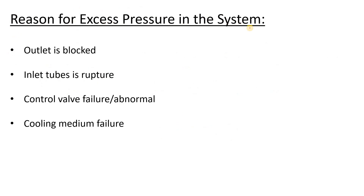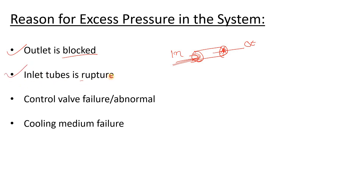There may be many reasons for excess pressure in the system. The first reason is the outlet is blocked — if the outlet is blocked, the inlet flow continues but nothing goes out, so pressure increases. The second reason is inlet tube rupture — if a low-pressure and high-pressure stream interact due to rupture, the pressure of the shell side of the heat exchanger will increase.